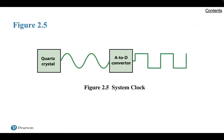Let's think about the system clock. Operations performed by a processor — such as fetching an instruction, decoding the instruction, performing an arithmetic operation — are governed by the system clock. Typically, all operations begin with a pulse of the clock. At its most fundamental level, the speed of the processor is dictated by the pulse frequency produced by the clock, measured in cycles per second, or hertz. We have a quartz crystal going to an ADC, producing the square wave used as the system clock to keep everything synchronized.